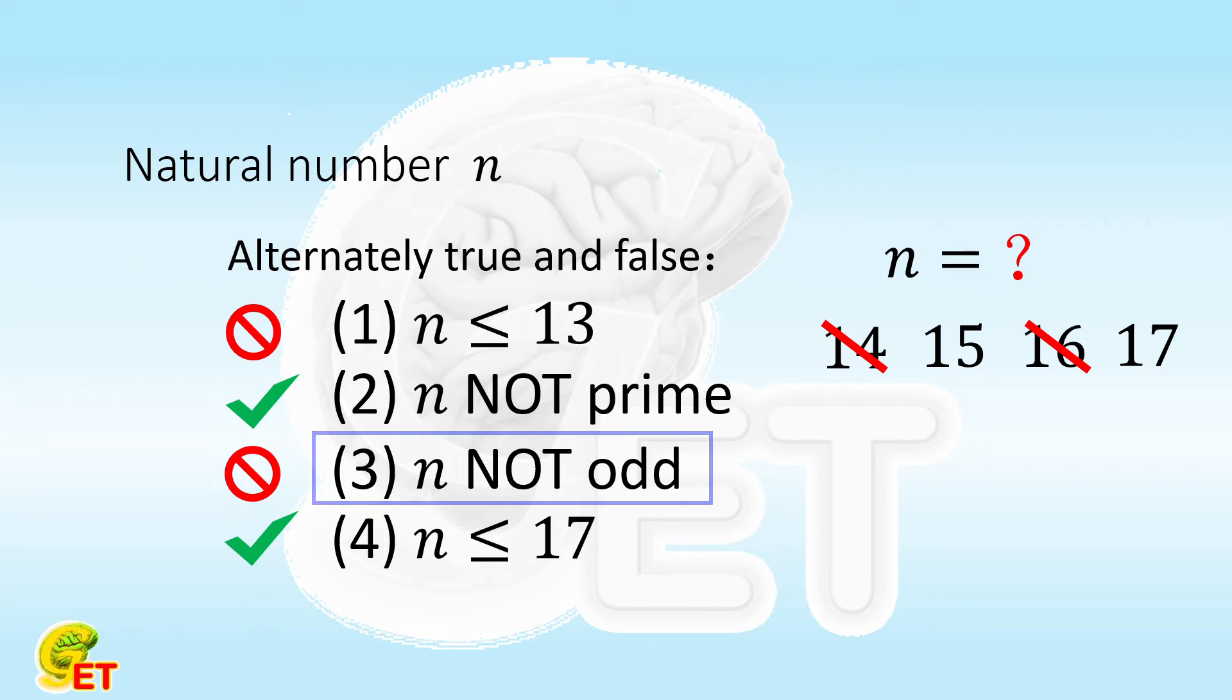n is not a prime number. So we exclude the prime number 17. Hence the final answer, n equals 15.